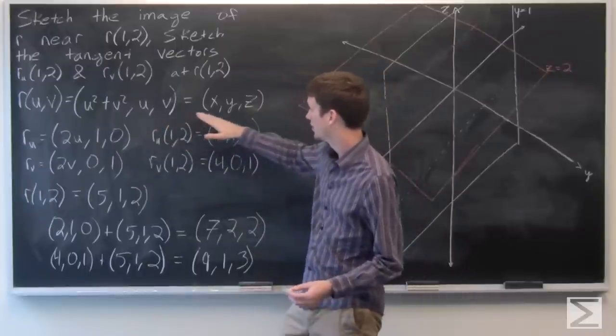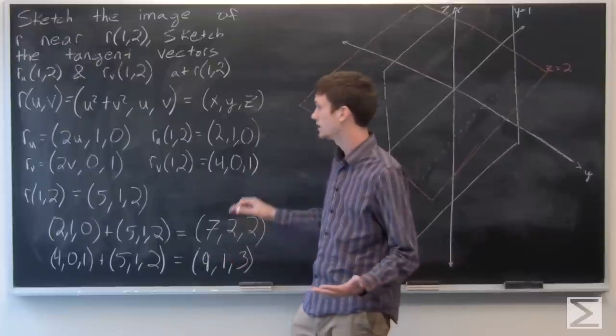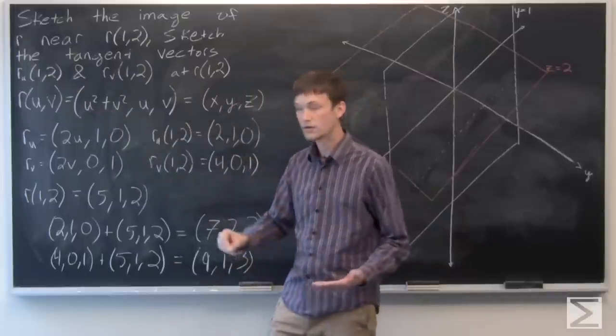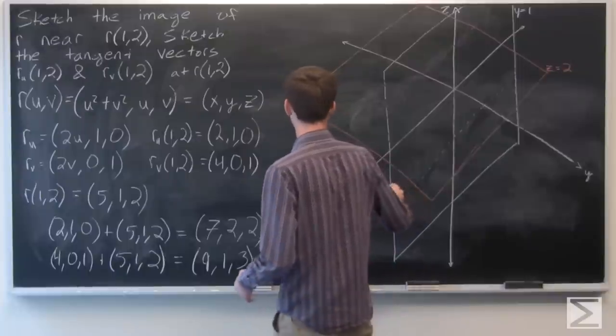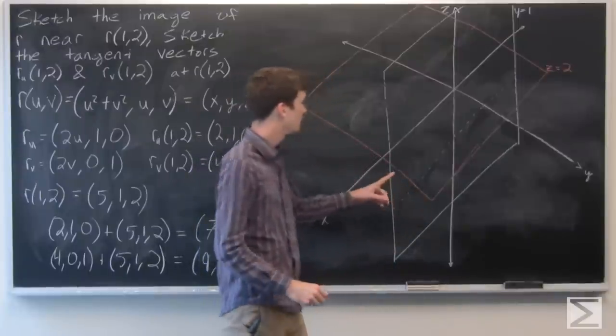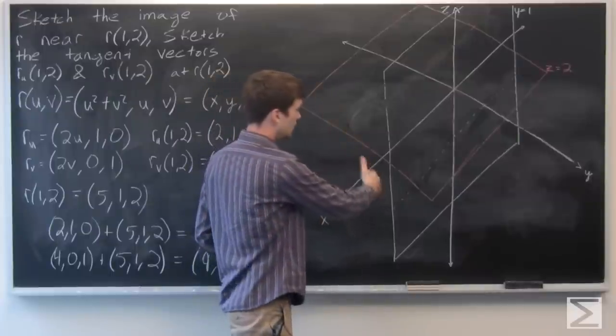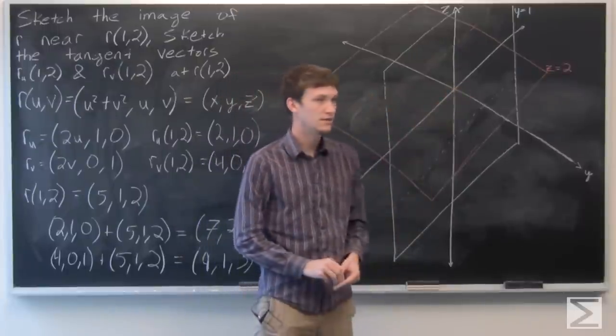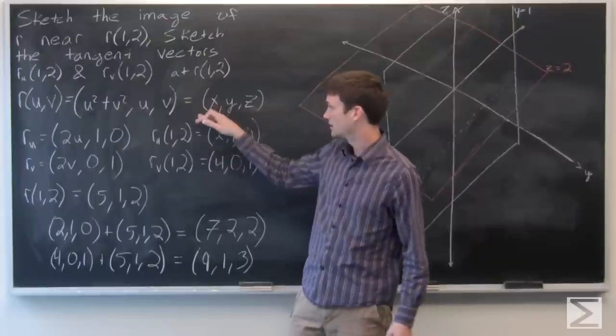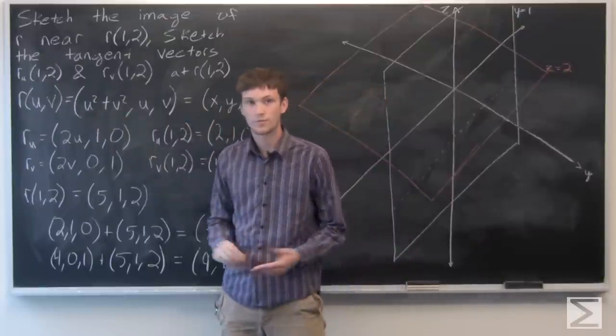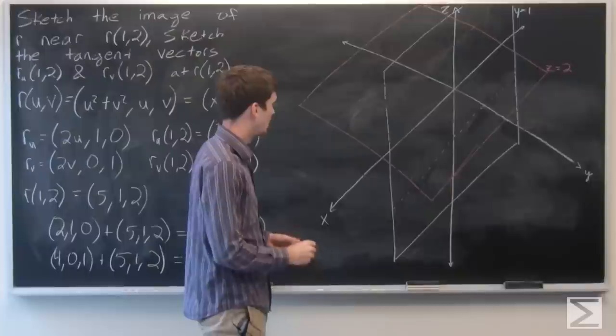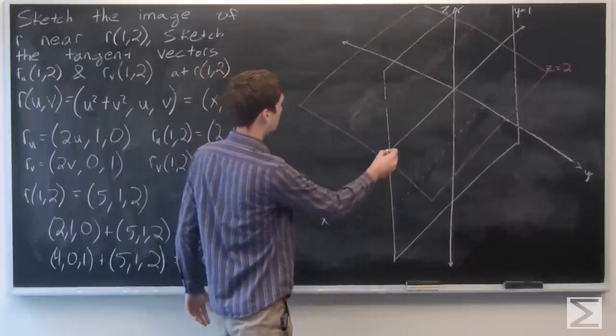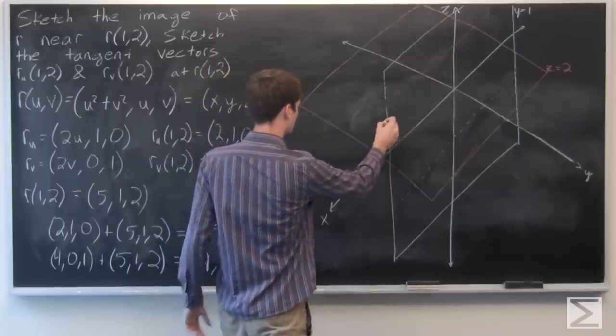If we set x to be a constant, let's say 4, then we have y squared plus z squared equals 4. So that's a circle of radius 2. So we see that if we take a cross-section along the x-axis, we'll get circles. As long as x is positive, and if x is negative we get nothing because this term will never be defined for real numbers.